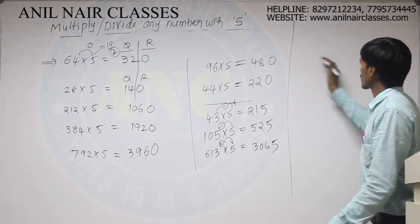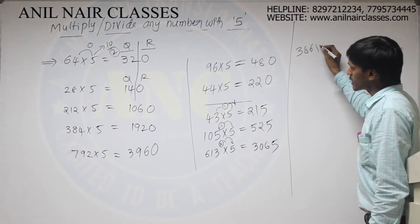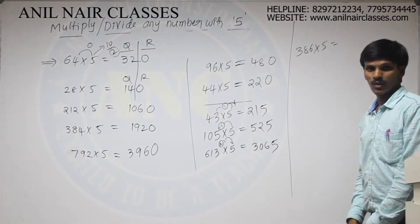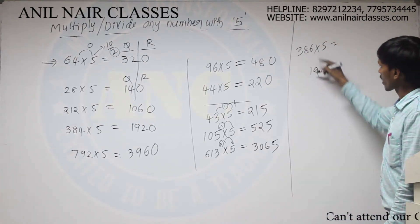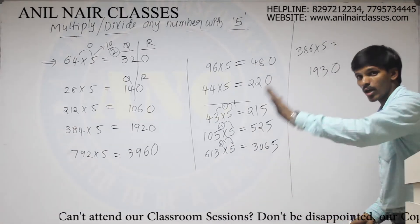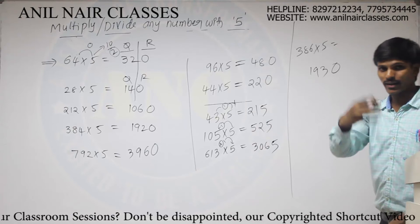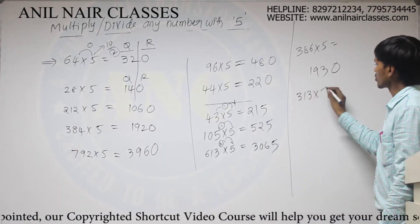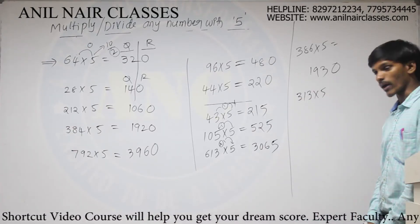For suppose, 386 into 5. Half of 38 is 19. Half of 6 will be 3. And additional 0. And let us take any odd number now. For suppose, 313 into 5.